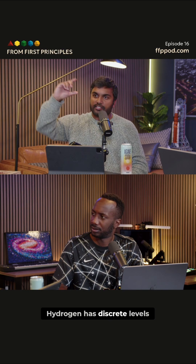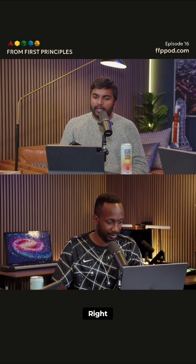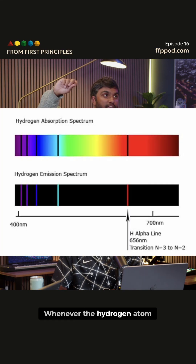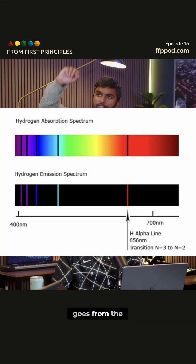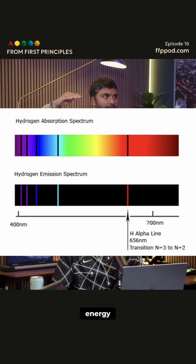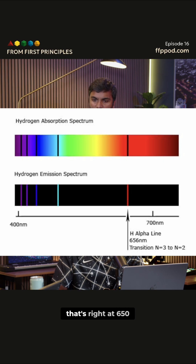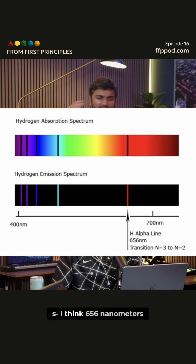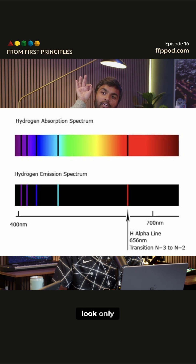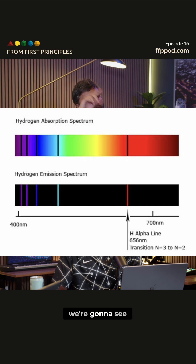The H-alpha emission line is because of quantum mechanics. Hydrogen has discrete levels, and whenever the hydrogen atom goes from the n=3 to n=2 energy level, it releases red light right at about 656 nanometers. So if we look only at that frequency of light, we're going to see the gas cloud.